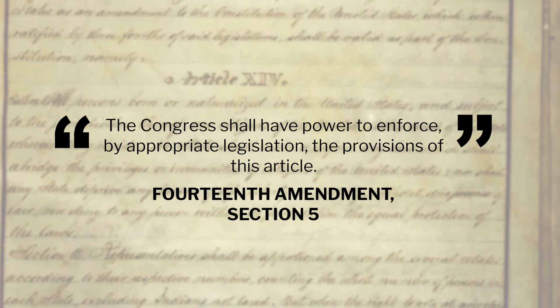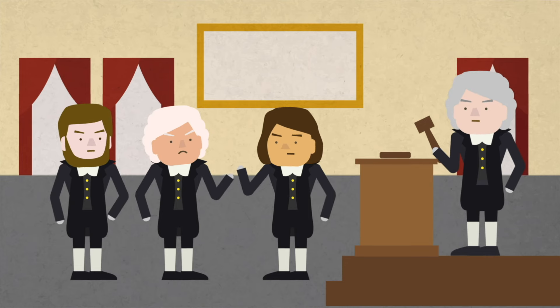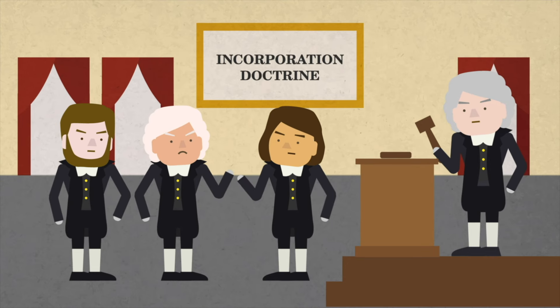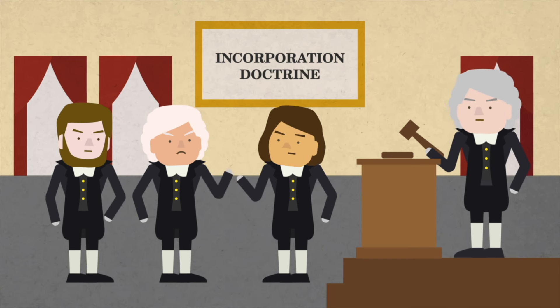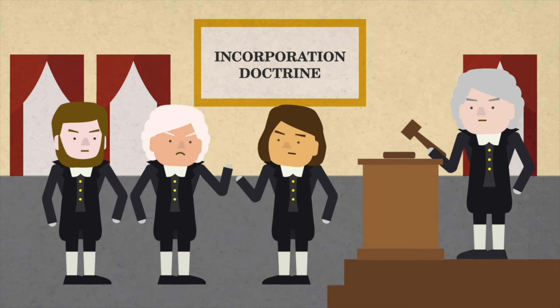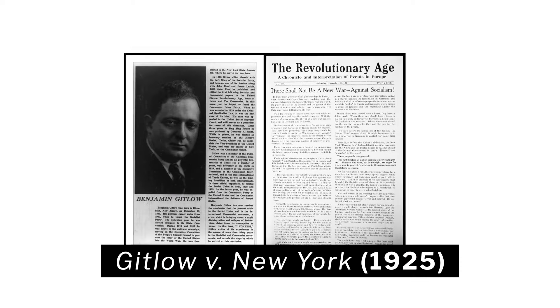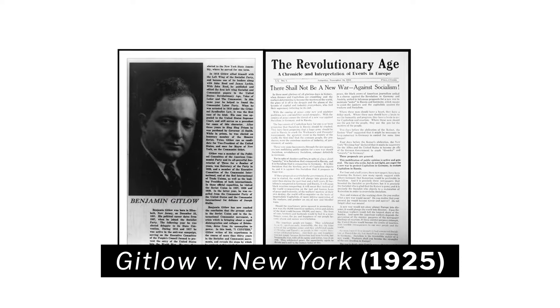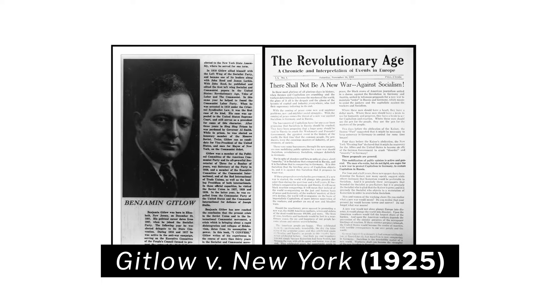However, members of Congress refused to restrict the powers of the state government and argued that individuals in the states were already protected by the state constitutions and bills of rights. Madison lost that debate, and the Bill of Rights applied to the national government. The states ratified the first ten amendments, which meant that states could theoretically pass laws that violated provisions set in the Bill of Rights.